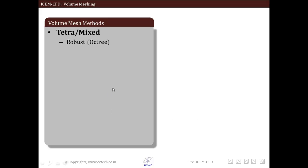We will see tetramix mesh, within that we will see robust or the robust octree method or algorithm. We will see the quick Delaunay algorithm. We will also see the smooth advancing front type of method. We will see how T-grid can be used.